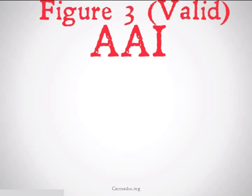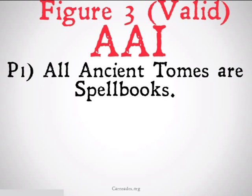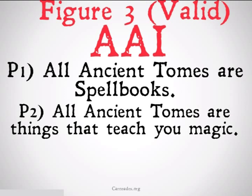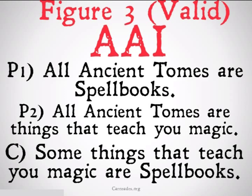A valid version of AAI for Figure 3 is: All ancient tomes are spellbooks. All ancient tomes are things that teach you about magic. Therefore, some things that teach you magic are spellbooks. The only thing that needs to exist for this to be valid is ancient tomes, and because old books exist, this is a valid argument — even though spellbooks and things that teach you magic may not exist.